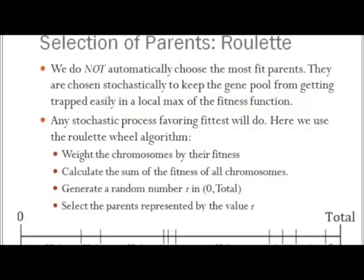For the other parent, we draw another random number. If we happen to get, say, 7, and it also falls in organism 6, we reject that because we need two distinct parents. So we draw again — this time, say, we get 9.8, and we're way over here. We choose organism 10 as the second parent, and these two will be selected for breeding.